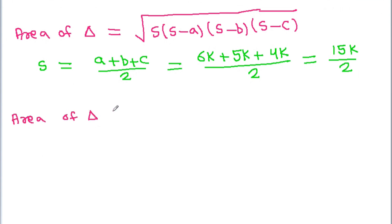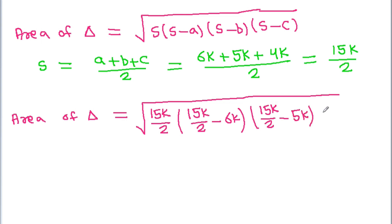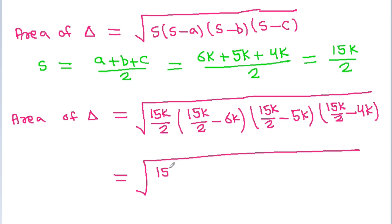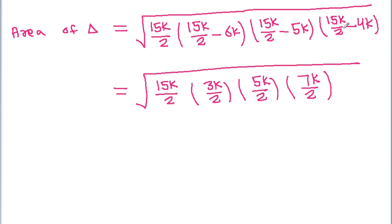Now the area of the triangle will be the square root of S, which is 15k/2, times (S minus A), which is 15k/2 minus 6k, times (15k/2 minus 5k), times (15k/2 minus 4k). Simplifying: 15k/2 minus 12k/2 is 3k/2, minus 10k/2 is 5k/2, and minus 8k/2 is 7k/2.